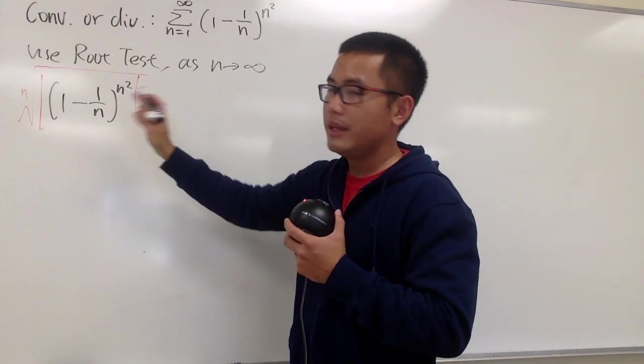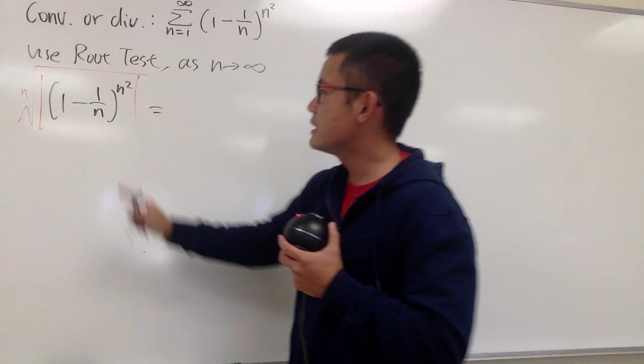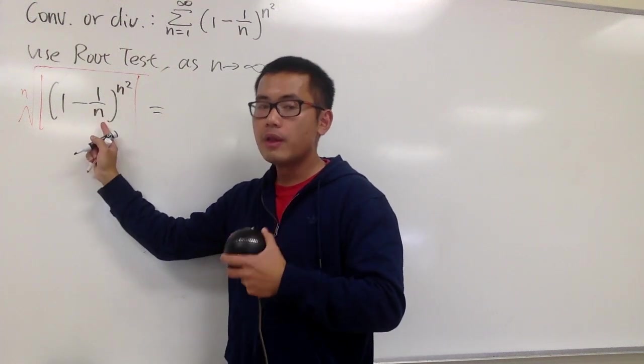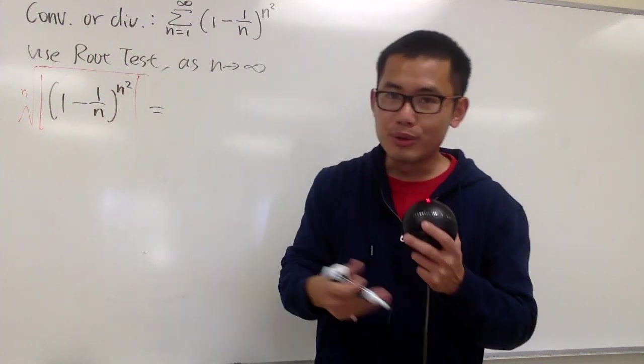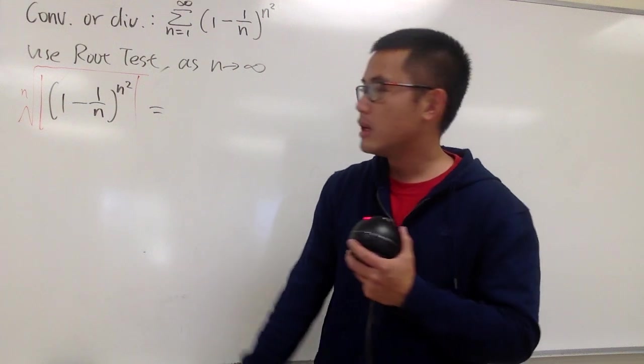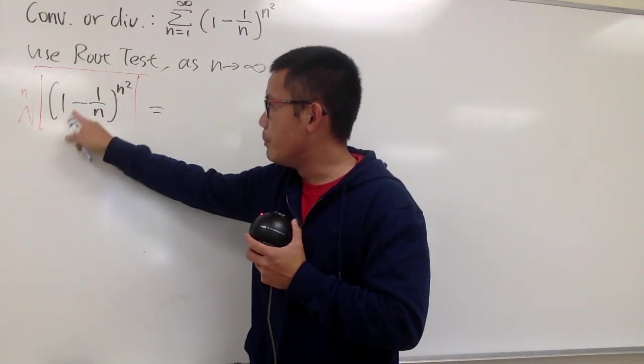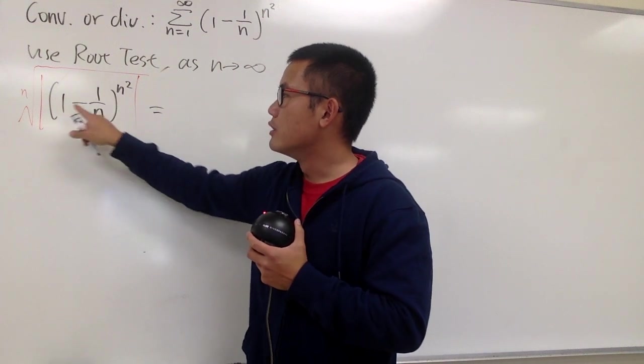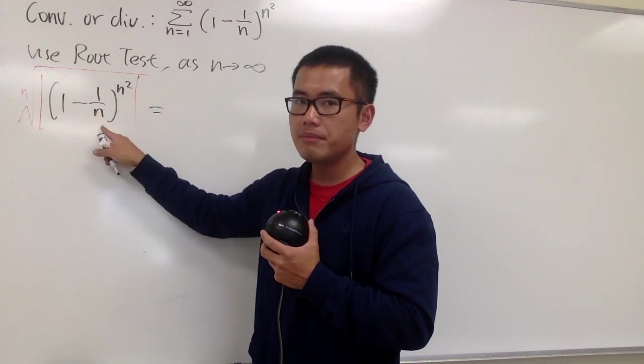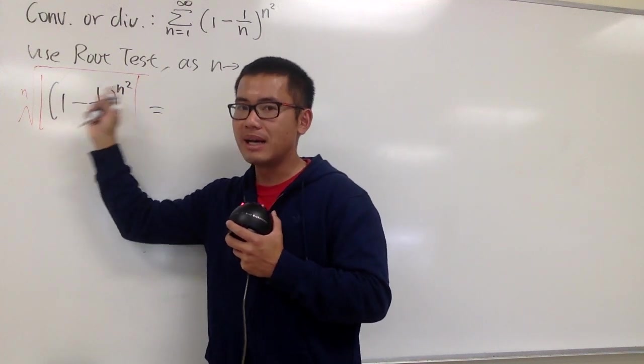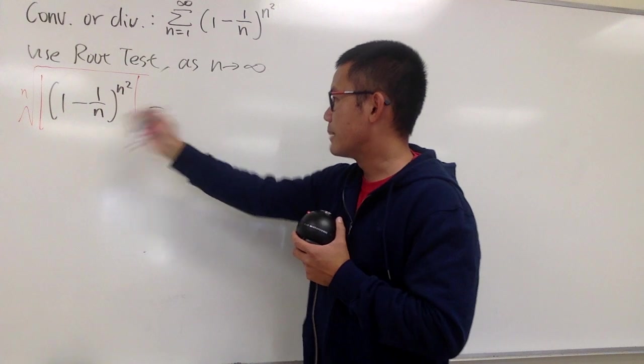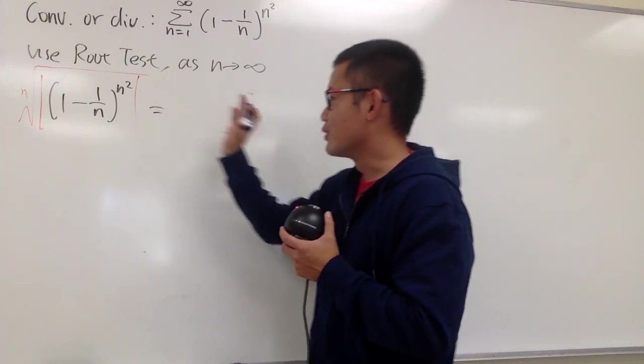Okay, the absolute value, in fact, doesn't matter, because 1 over n, you know n are just whole numbers, positive whole numbers. 1 is always going to be bigger than 1 over n. So when you have 1 minus 1 over n, this is always going to be positive, and the absolute value doesn't matter. So you can just drop the absolute value.